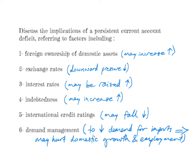The first learning outcome is to discuss the implications of a persistent current account deficit. A one-off current account deficit isn't really that much of a problem, but a persistent current account deficit might have some negative implications. The factors mentioned in the IB Economic Syllabus are those six. First of all, a persistent current account deficit may increase foreign ownership of domestic assets, because in order to finance that deficit, the country may have to have a surplus on the financial account, which may increase foreign ownership of domestic assets due to attracting foreign investment.